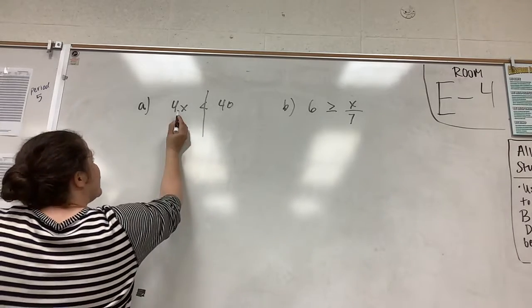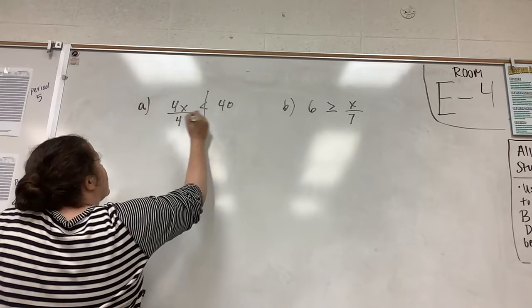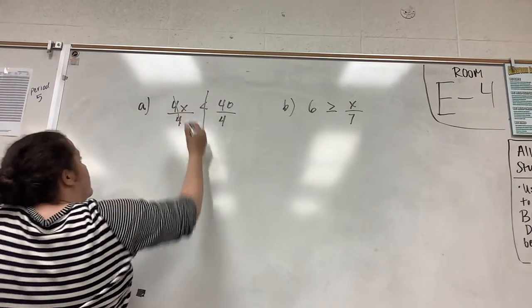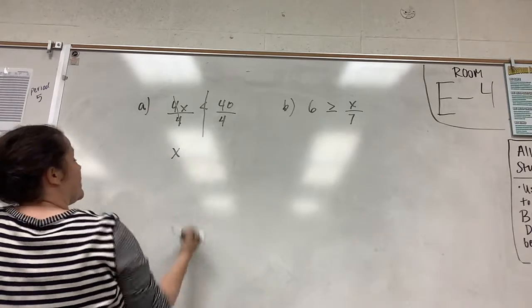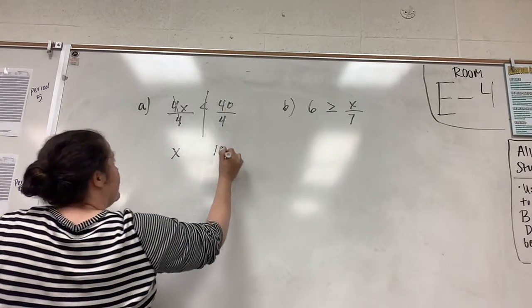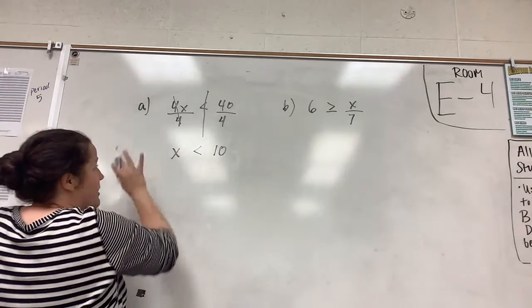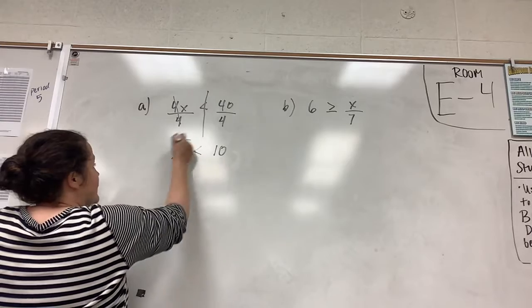So 4 times x, the opposite of multiplication is division. So we're going to divide that side by 4 and that side by 4. The 4s will cancel. We'll be left with x on this side. 40 divided by 4 is 10, and then we got to keep the symbol the same since we didn't have any negatives. So x is less than 10.